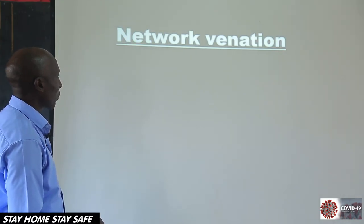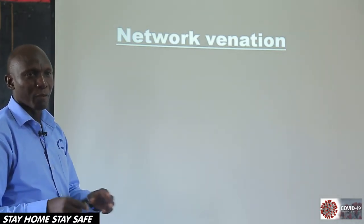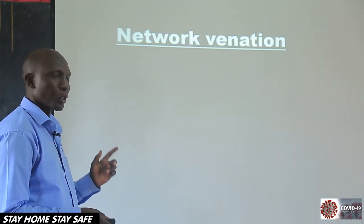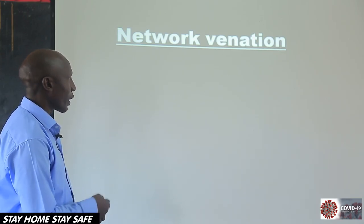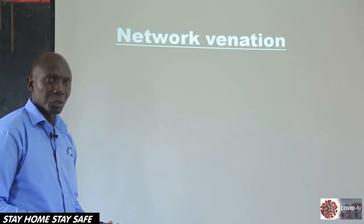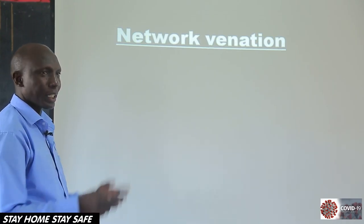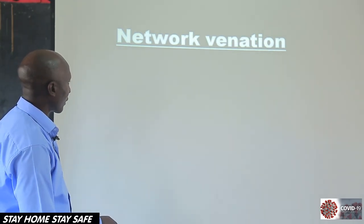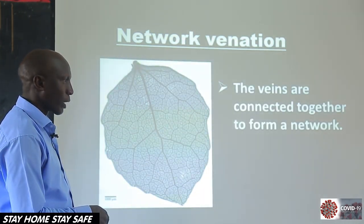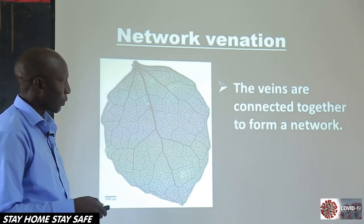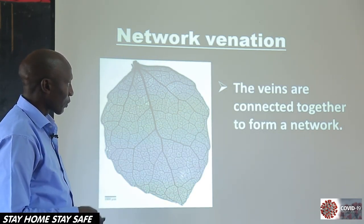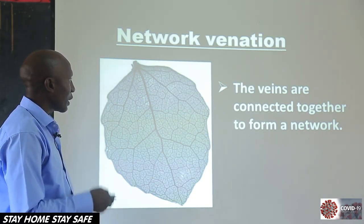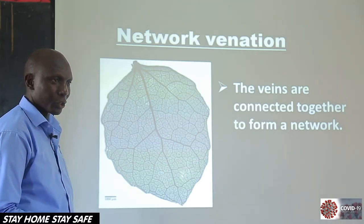Now let's look at the venation for dicotyledonous plants. Venation, as I told you, is the arrangement of veins in a plant. For monocots we saw parallel venation; for dicots they have the network leaf venation. What does it look like? The veins are arranged in such a way that they form a net — the veins are connected together to form a network. So if you look around at some of the leaves nearby, they may have this kind of venation. This is what we call network venation.